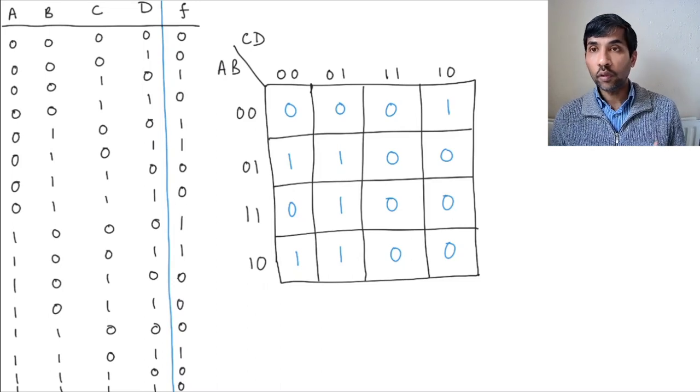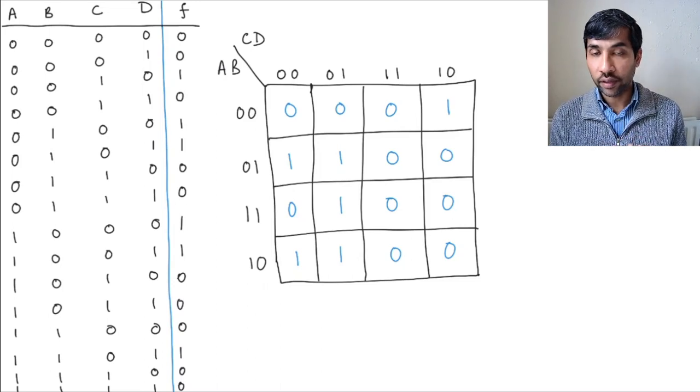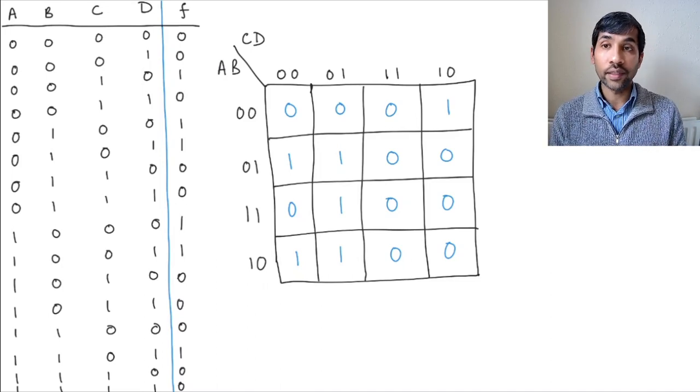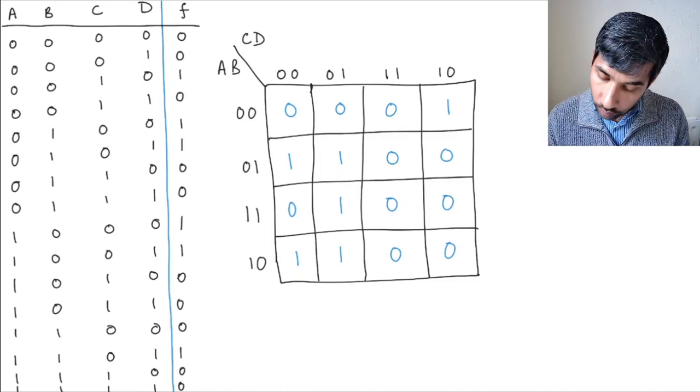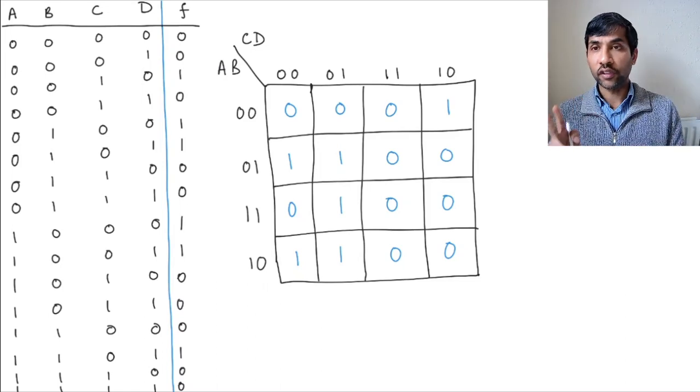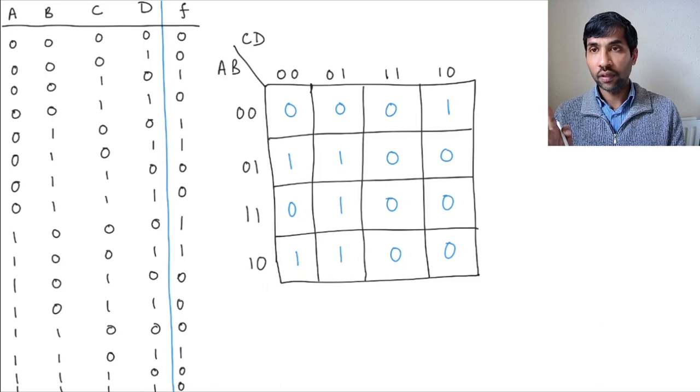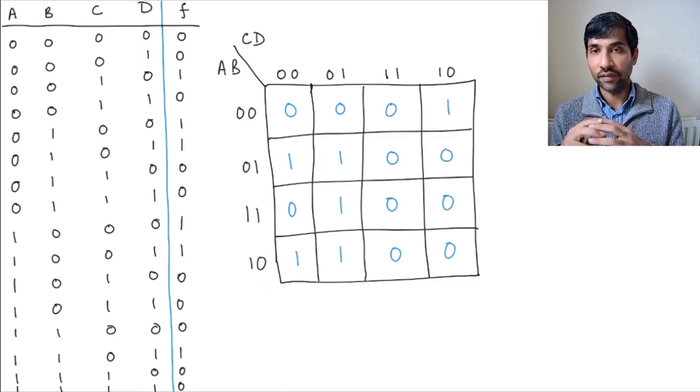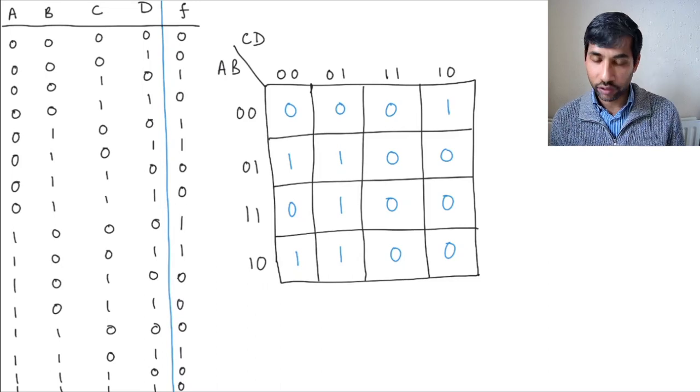Now what we want to do is we want to write an equation, we want to form groups of the ones that are already there. So let's see what kind of groups that can be formed. You can form groups of either 2, 4, 8, or 16, or if you can't form groups, then a 1 can just remain on its own also.